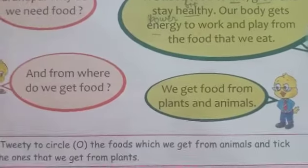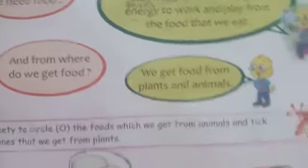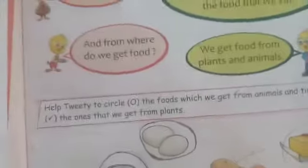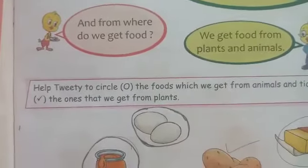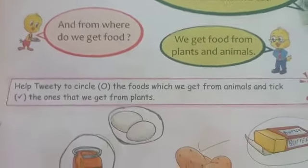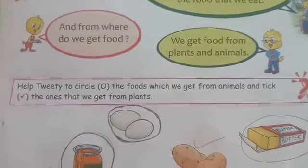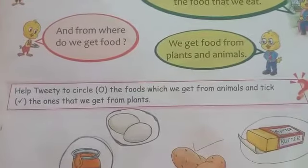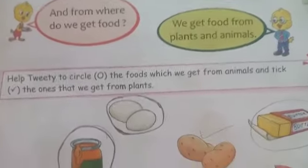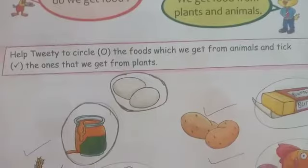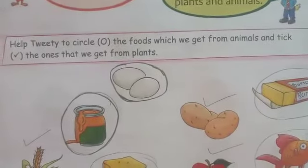Grandpa answered that we get food from plants and animals. Now help Tweety to circle the food which we get from animals, and tick the ones that we get from plants. Circle the food item which we get from animals.